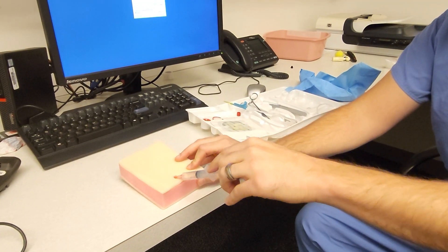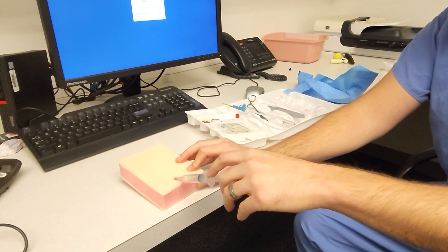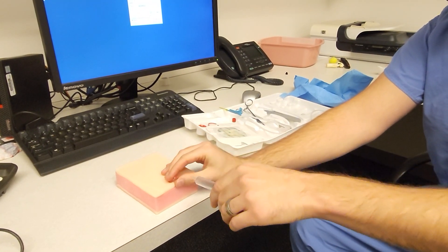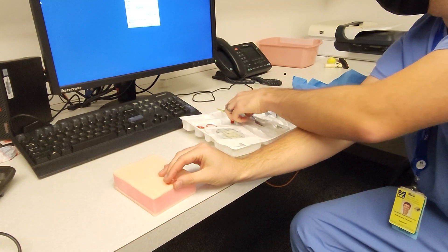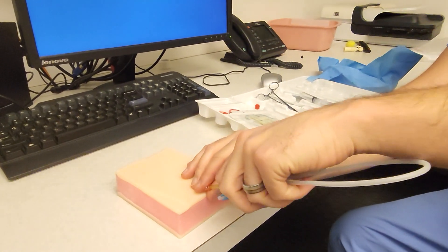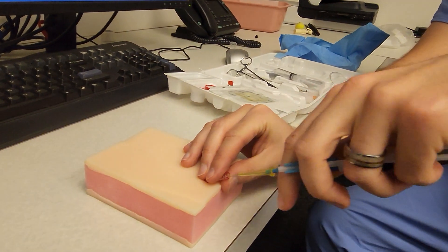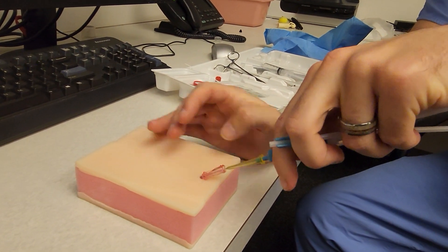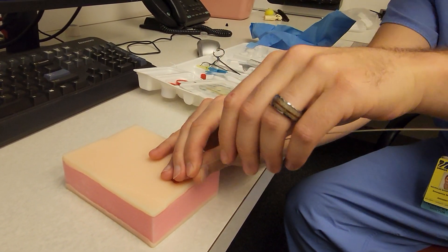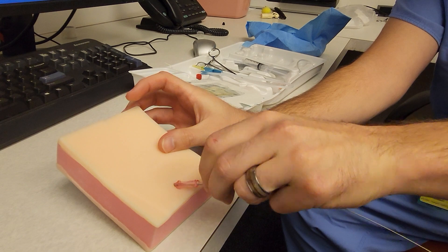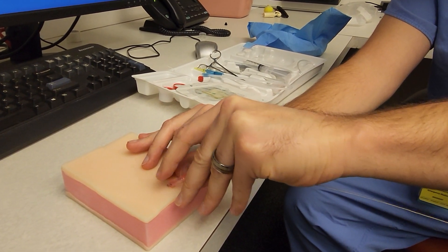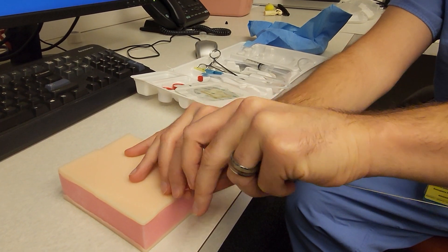Once you have brighter red blood because it's arterial and higher pressure, you stabilize the needle. Take your guide wire, insert, and then you can remove your needle.